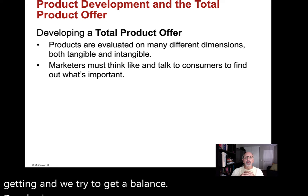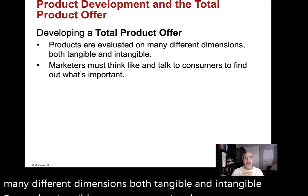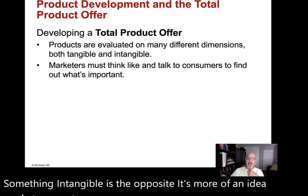Developing a total product offer. Products are evaluated on many different dimensions, both tangible and intangible. Tangible means you can touch, taste, or smell something. Intangible is the opposite — it's more of an idea. Marketers must think like and talk to consumers to find out what's important.